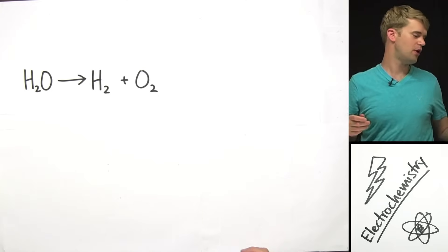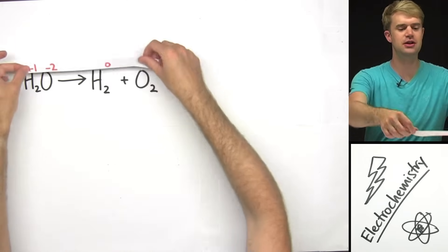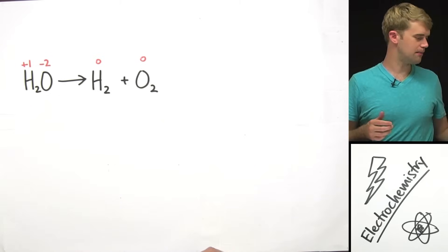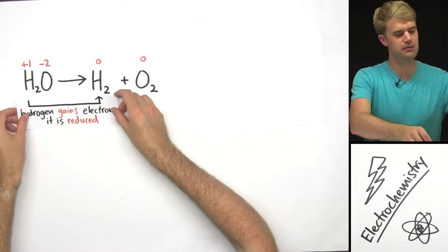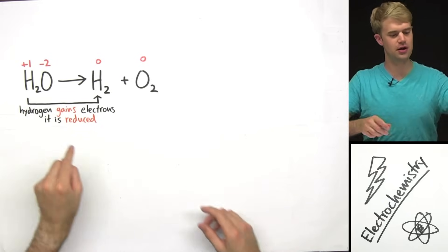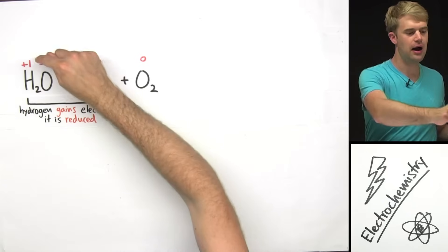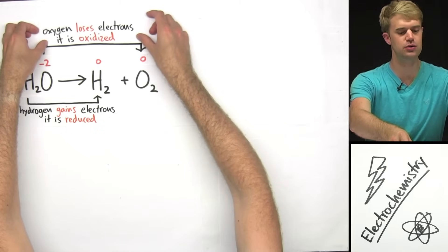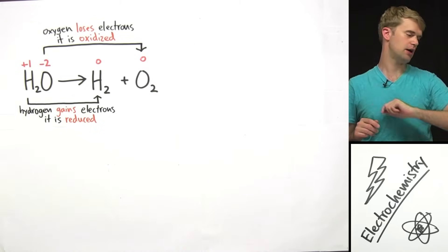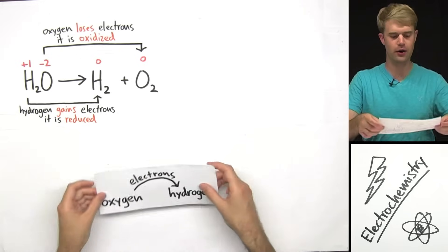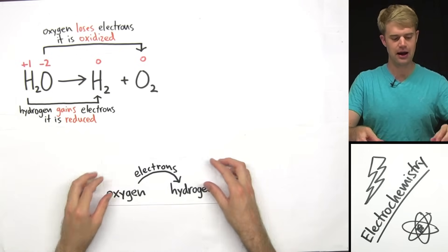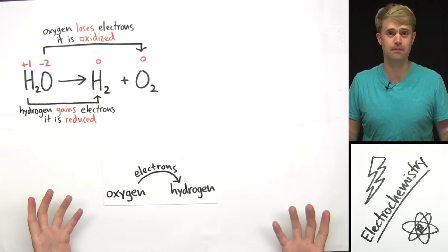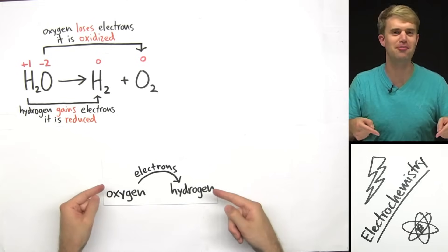We've got electrons moving here. To understand how they move, we've got to take a look at the oxidation numbers for the different elements. Hydrogen's oxidation number is going down, which means it is gaining electrons — it is reduced. Oxygen's oxidation number is going up, which means it is losing electrons — it is getting oxidized. So electrons are moving from oxygen, which is losing them, to hydrogen, which is gaining them.